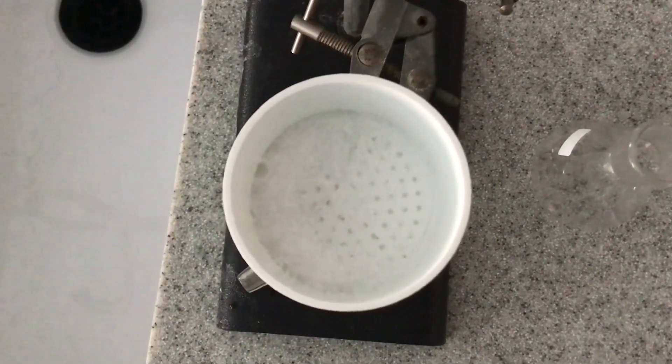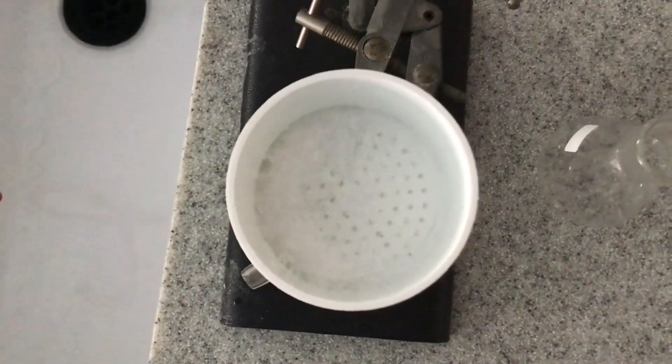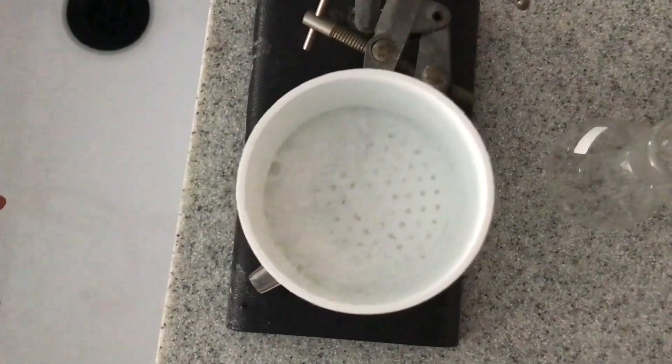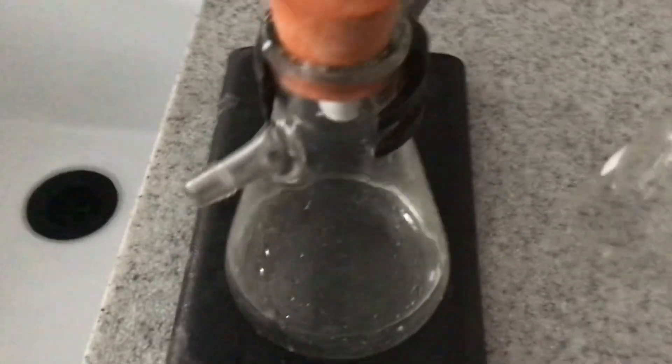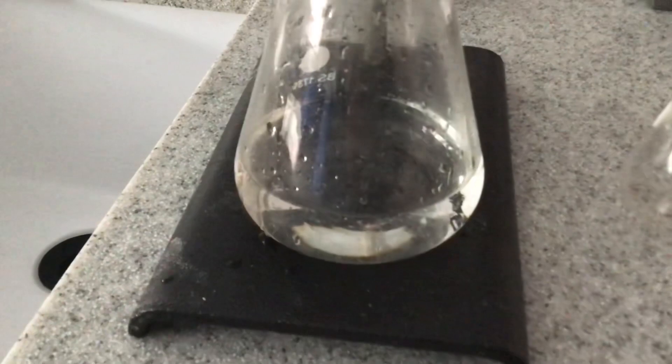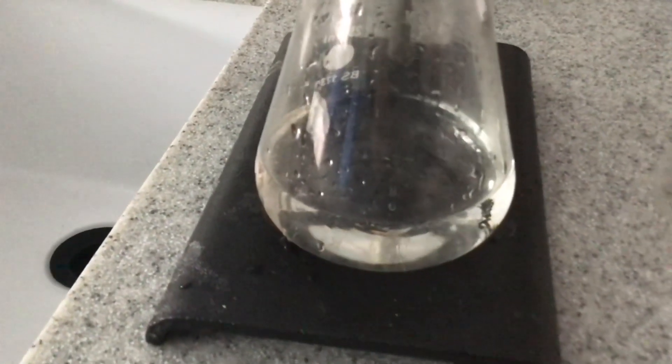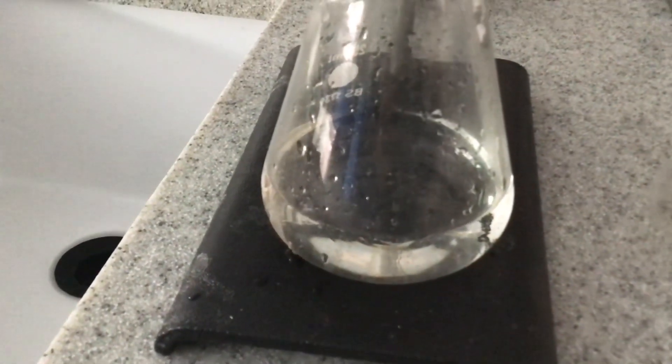Hopefully you can see there we've got crystals on top of that filter paper and the solvent is in the flask. The separation has been done. That's vacuum filtration, a really useful process if you're wanting to recover a solid product.